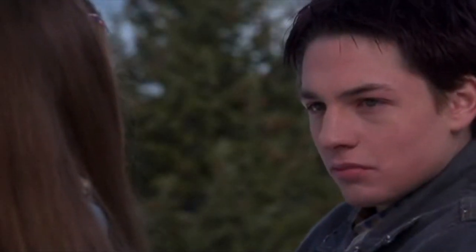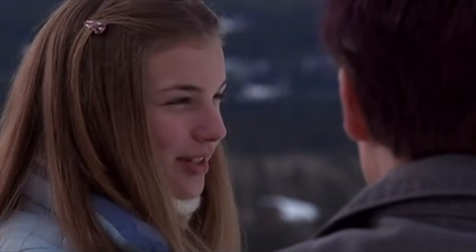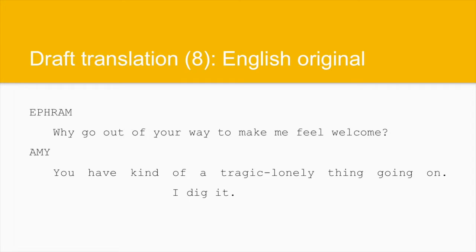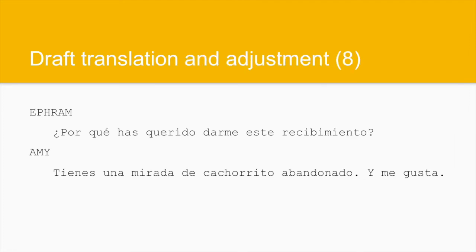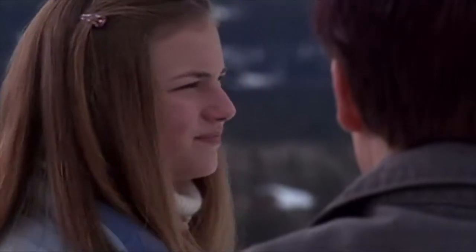I mean, you seem like you have enough friends. Why are you going out of your way to make me feel welcome? You've got kind of a tragic, lonely thing going on. I dig it. Finally, one last interesting bit of talk. Ephraim asks, 'Why go out of your way to make me feel welcome?' Amy: 'You have kind of a tragic, lonely thing going on. I dig it.' This we adjusted to: ¿Por qué has querido darme este recibimiento? Tienes una mirada de cachorrito abandonado. Y me gusta. Therefore, with 'a tragic, lonely thing going on,' we transformed a general reference into a metaphor, 'mirada de cachorrito abandonado,' that the intended audience will find accessible as well as meaningful for the characterization. You don't happen to listen to Al Green, do you? He's Al Green.